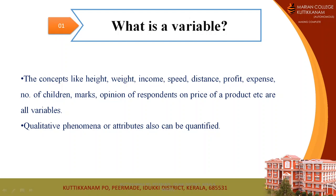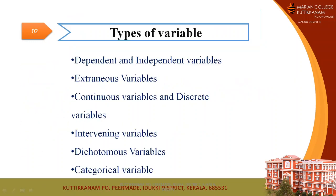There are different types of variables in research: dependent and independent variable, extraneous variable, continuous variable, discrete variable, intervening variable, dichotomous variable, and categorical variable. We will see each type of variable in detail.